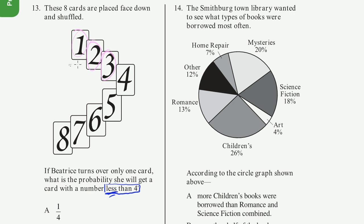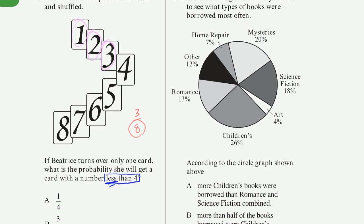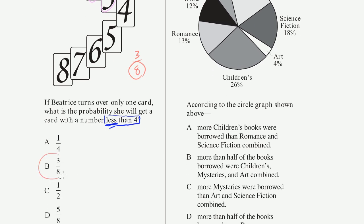So the probability is just three cards that satisfy your condition divided by the total number of outcomes. So the probability of her picking a card that is less than 4, there's three cards that are less than 4 out of eight cards, the probability is 3 eighths. And that is choice B. Always nice when our answer is actually there.